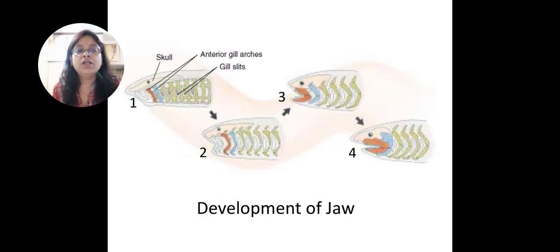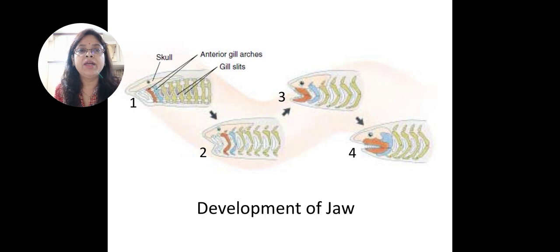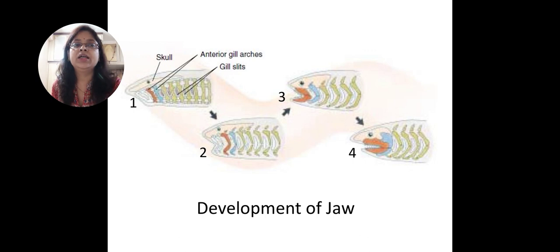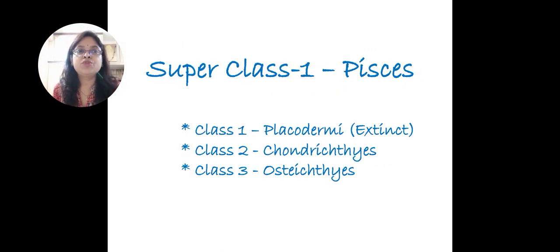You can see here the development of the jaw. In the first figure you can see the anterior gill arches in the back of the jaw — in green color, blue color, and red color. The anterior gill arch is in the back of the jaw. In the third figure you can see the anterior gill has increased. The anterior gill arches are now on the jaw. First of all, we will study the superclass Pisces.